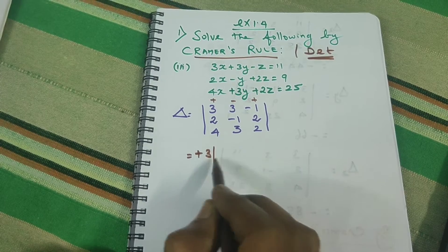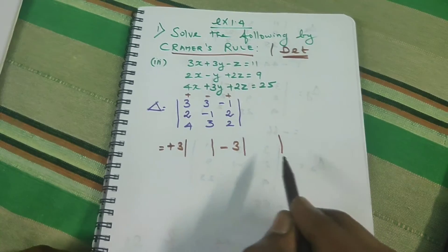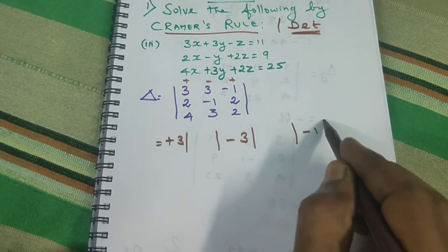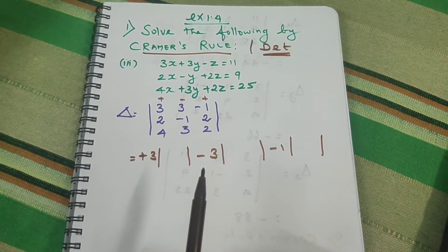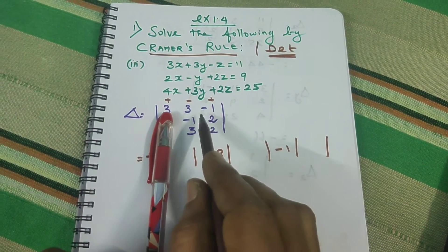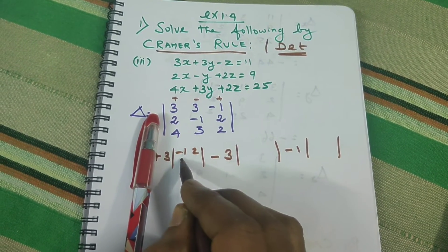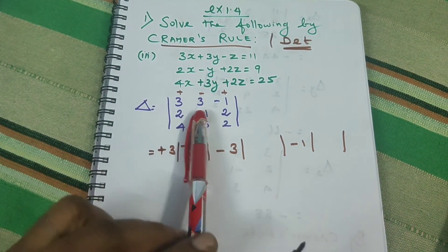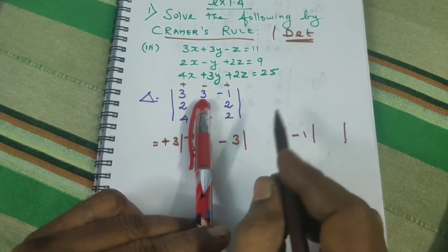For the minor of 3, we take the 2x2 sub-matrix of the remaining elements and compute its determinant. For example, minus 1, 2 and 3, 2 gives us the minor. We repeat this process for each element in the first row to find the value of the coefficient determinant delta.